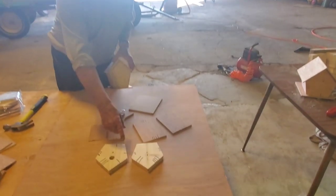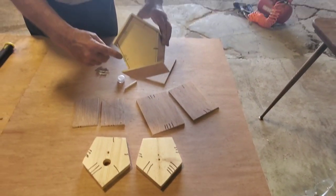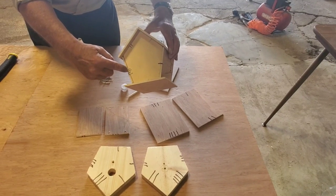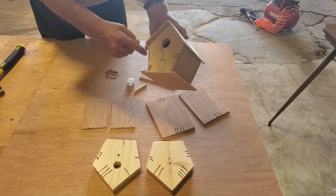You'll notice all the marks on these pieces, and these marks are aligning marks. When you're working on your birdhouse, you're going to have marks that have to line up like these ones.